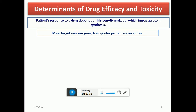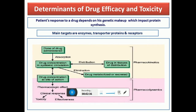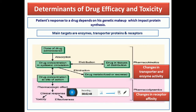A patient's response to a drug depends upon genetic makeup because genes determine protein synthesis. The main targets when it comes to drug efficacy and toxicity are changes in enzymes, transporter proteins, and receptors. For kinetic processes, changes in transporter and enzyme activity — and the genetic mutations affecting them — are key. For dynamic processes, we look at changes in receptor affinity and structure, which give rise to differences in drug response.